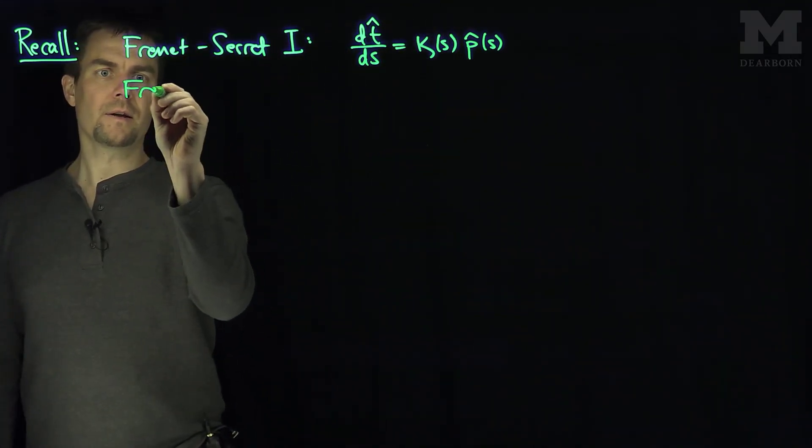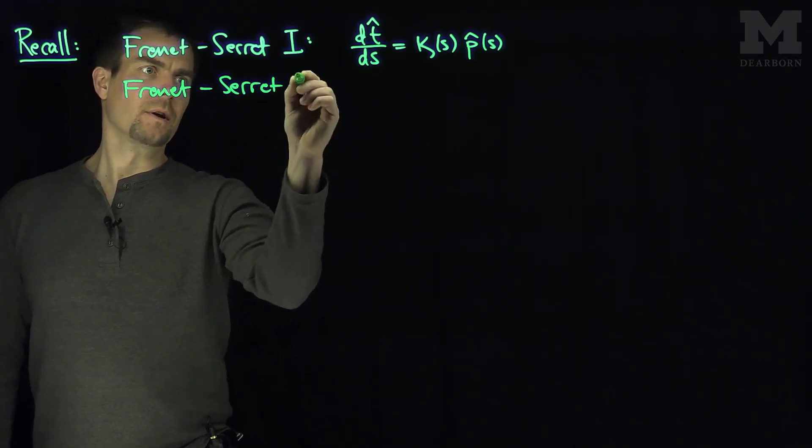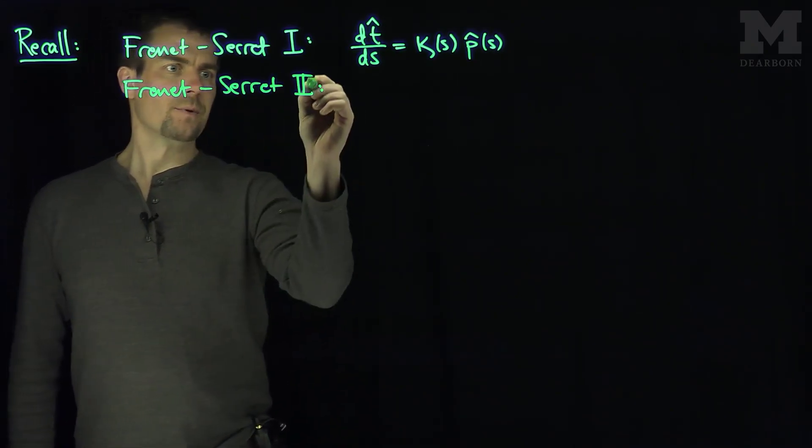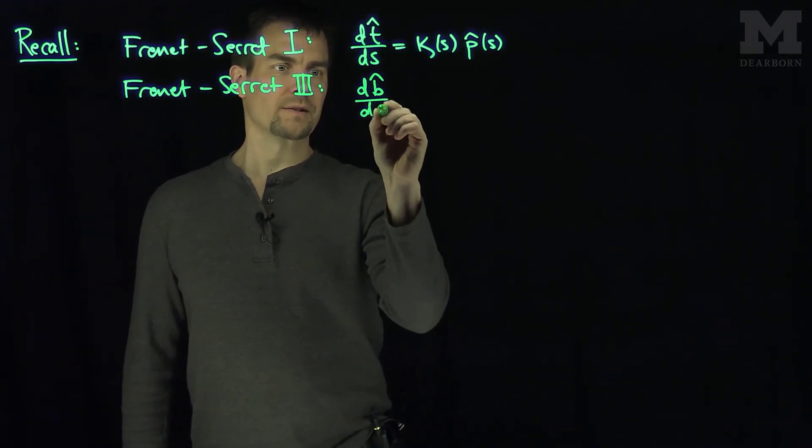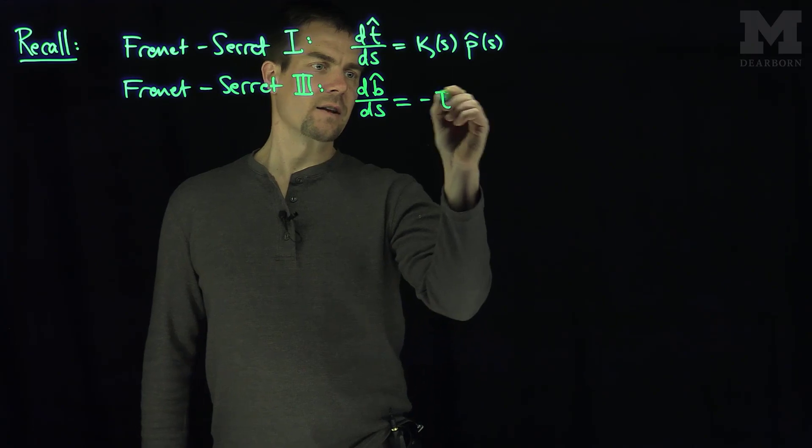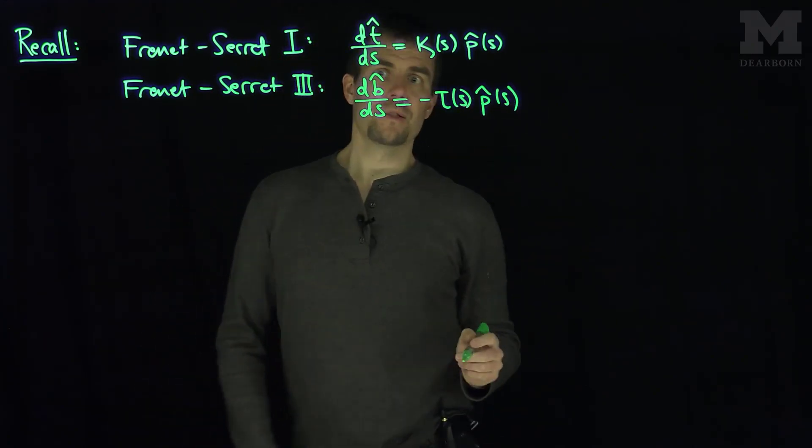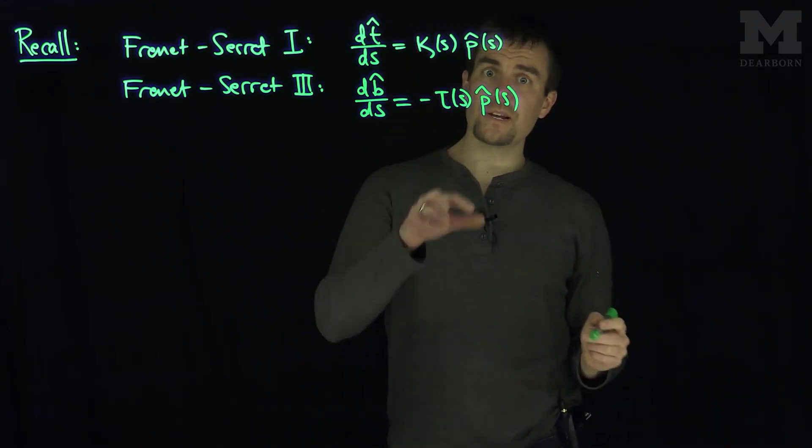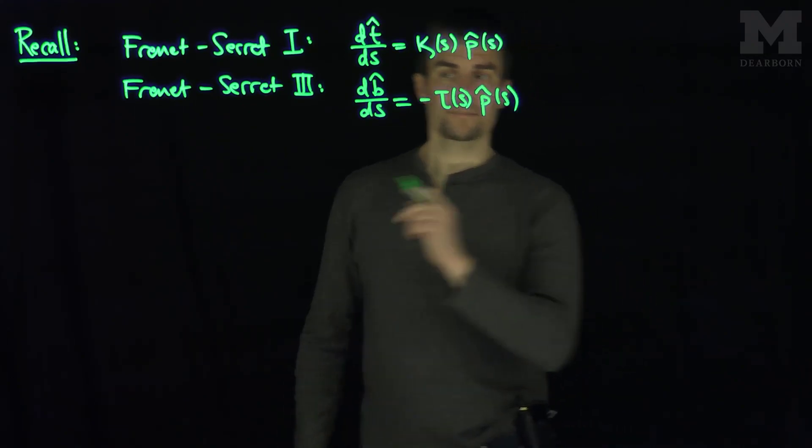Frenet-Serret number three, in some sense Frenet-Serret number one defines what the curvature is. Frenet-Serret number three tells us that the derivative of the binormal vector with respect to s is negative torsion of s p hat of s. So note that both dtds and dbds lie in the same plane, they lie along that vector direction.